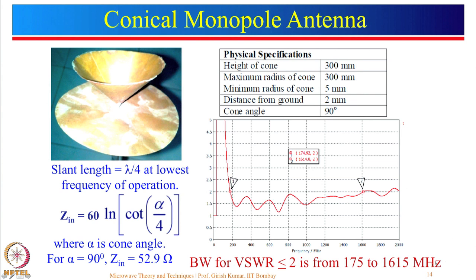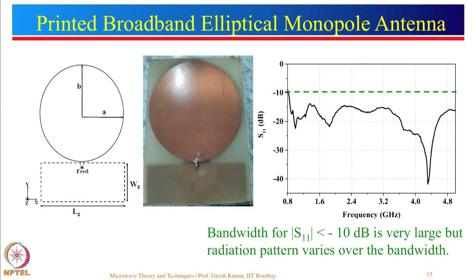A printed broadband elliptical monopole antenna has the elliptical element on the top side of the substrate, with a ground plane printed underneath, and uses a coaxial feed. The measured response shows that from 0.8 GHz up to about 5 GHz, the reflection coefficient is less than minus 10 dB — demonstrating a very large bandwidth achievable with this configuration.